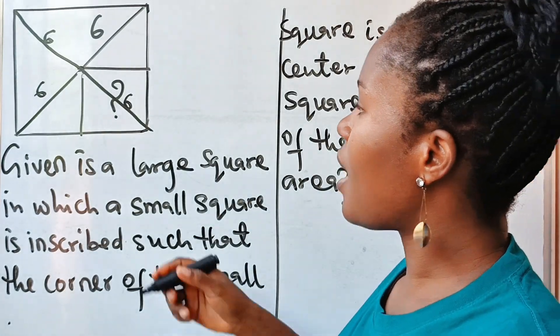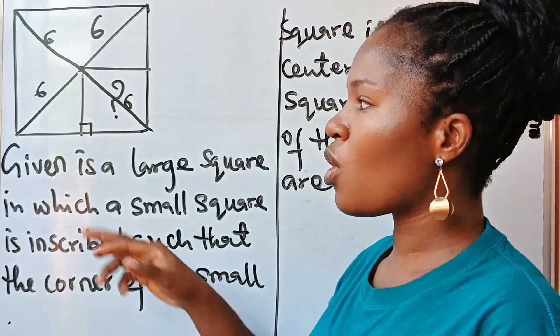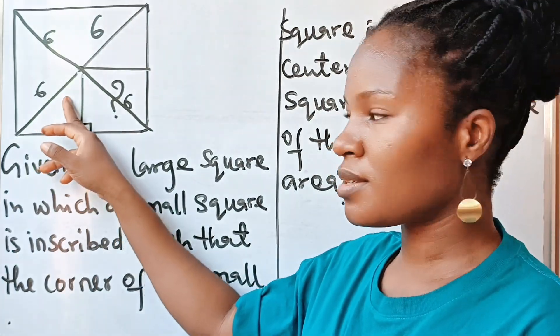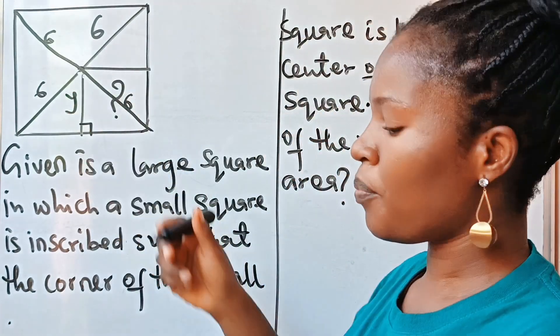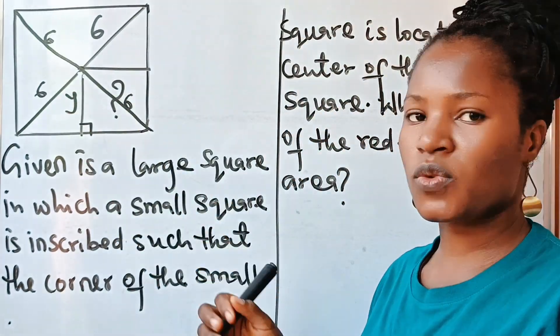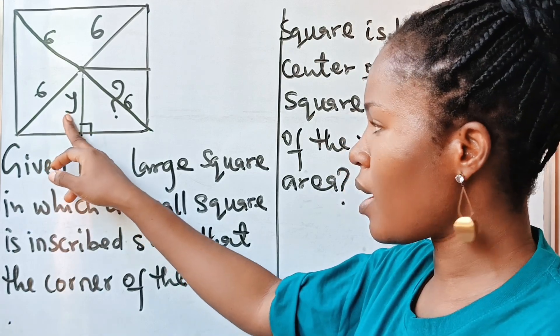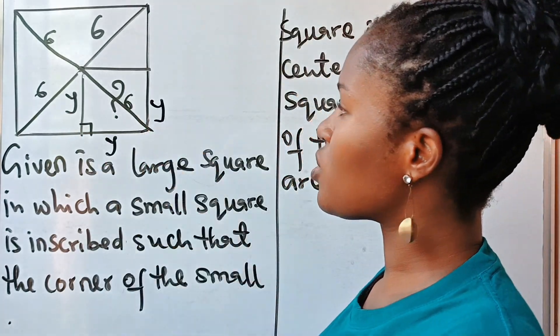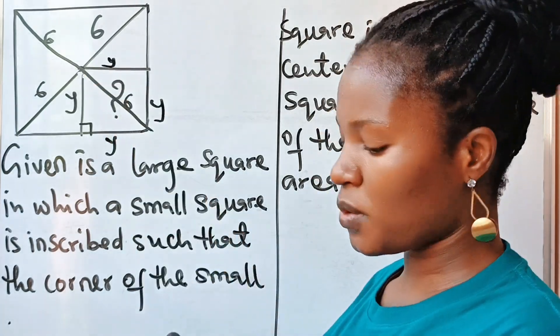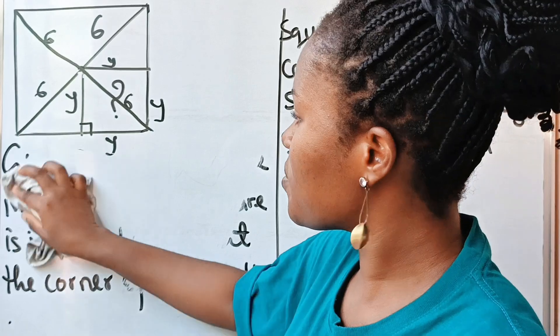Now we have a right angle here. Let us call the length of this square y. Now remember that the size of a square, the sides are equal. So if this place is y, then this place is also y, this place is also y, and this place is also y. Now before we continue let me clean this off because I don't have much space here left.